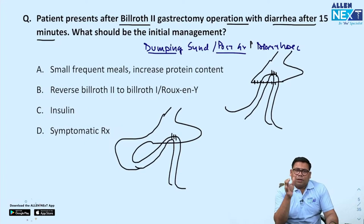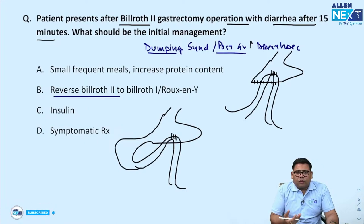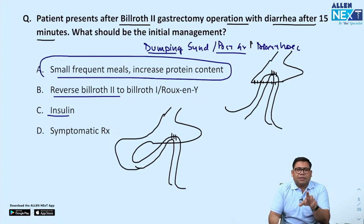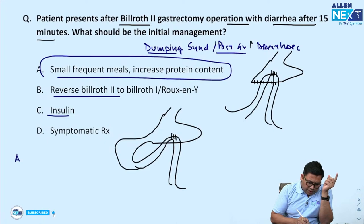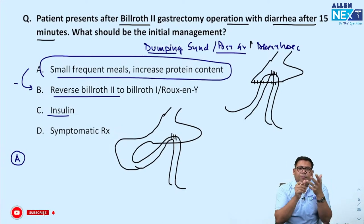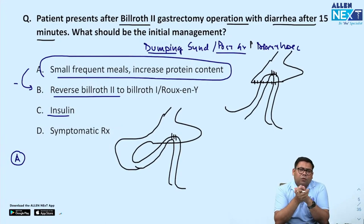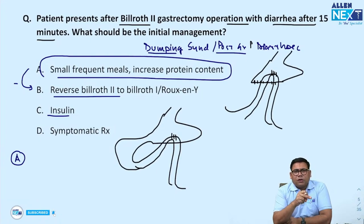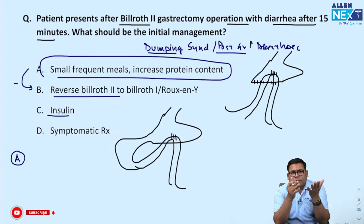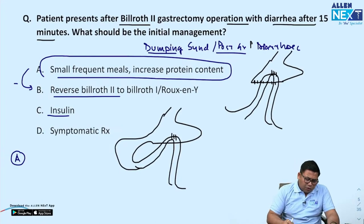We will not convert Billroth II to Billroth I or Roux-en-Y gastrojejunostomy immediately. Insulin is not required here. What is important is small frequent meals and a low carb diet — increasing protein alone will not change things; it is a low carb, small meal diet. Rifaximin can be tried, and if it does not work, injection octreotide is given. If that also fails, you go for a Braun's procedure — conversion of the loop gastrojejunostomy with a side-to-side jejunojejunostomy — or conversion to Roux-en-Y.